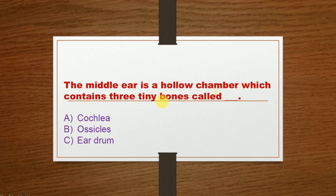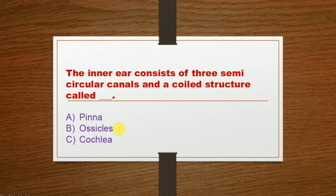Option A: Cochlea, Option B: Ossicle, Option C: Ear drum. The correct option is Option B: Ossicle. Next question: The inner ear consists of three semicircular canals and a coiled structure called dash.